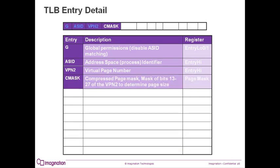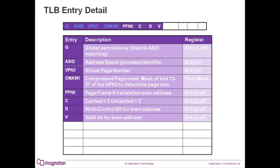CMASK determines the size of the page that is mapped by this entry. CMASK is stored in the page mask register. PFN0 is the physical address translation for the even numbered page. PFN0 is stored in the entry low zero register. The CBIT is the cacheability attribute of the page. This will determine if the translated page address will be looked up in the cache or directly used to access memory. The CBIT is stored in the entry low register.